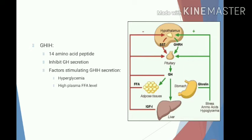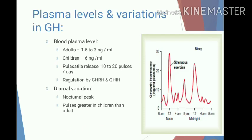Factors that stimulate GHRIH secretion include hyperglycemia and high plasma free fatty acid concentration. Regarding plasma levels, blood plasma growth hormone level varies in adults from 1.5 to 3 nanograms per ml, whereas in children it is 6 nanograms per ml. There is a pulsatile release of growth hormone — 10 to 20 pulses per day — regulated by GHRH and GHRIH.